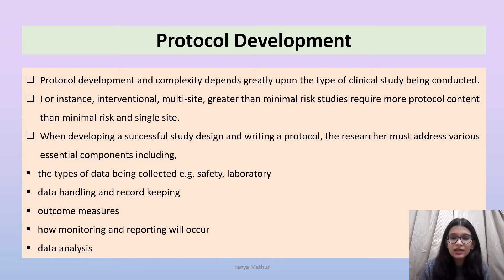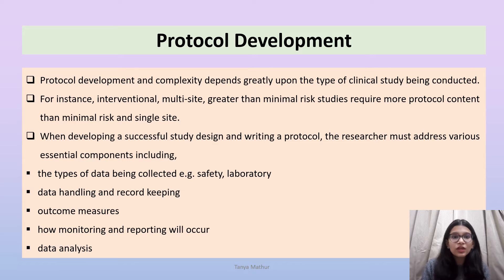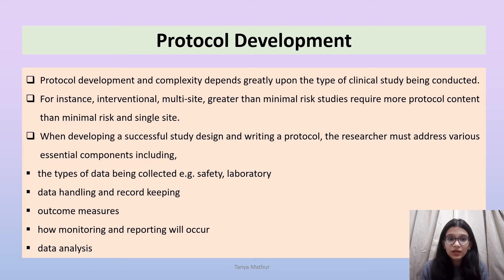When developing a successful study design and writing a protocol, the researcher must address various essential components. Every component has its own characteristic feature, playing an important role. For example, the types of data being collected — that is the safety data, the laboratory data, data handling and record keeping, outcome measures — as well as how monitoring and reporting of the clinical trial will occur, and the data analysis.